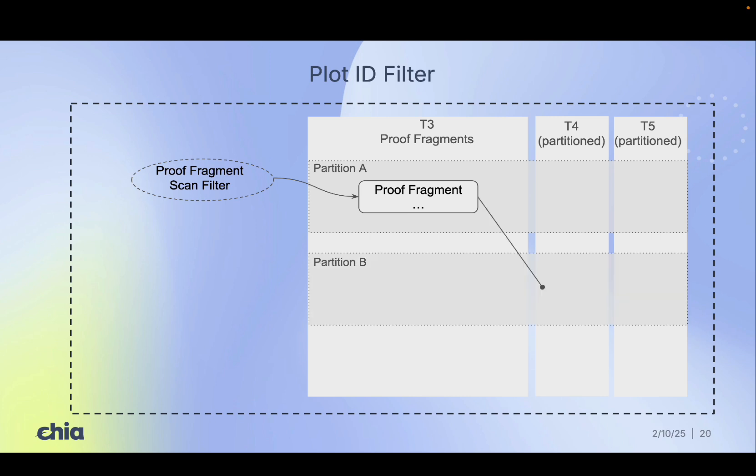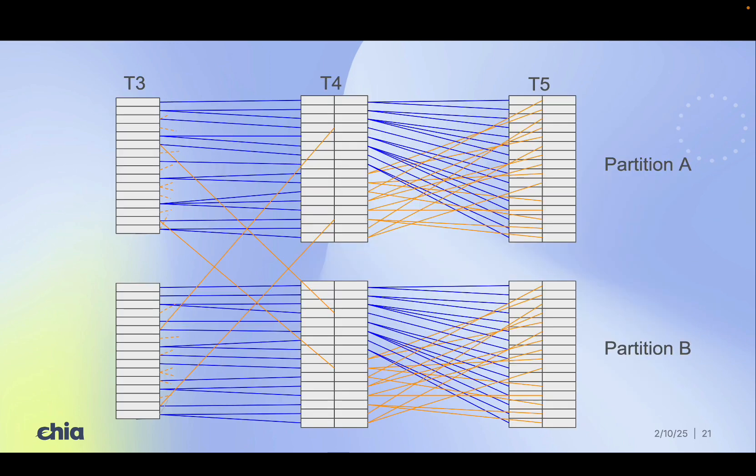A passed proof fragment contains embedded bits that indicate which other partition it links to. Let's take a quick look at the data structures between these two partitions. All left and right pointers from T5 to T4 are contained within the same partition. Some right pointers cross over from T3 in one partition to T4 in the other.